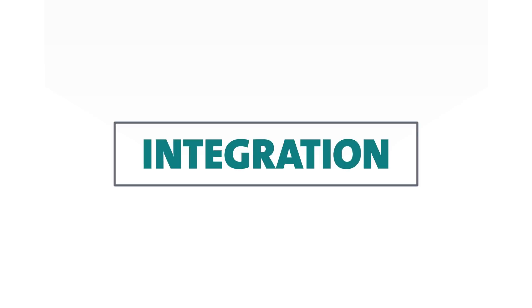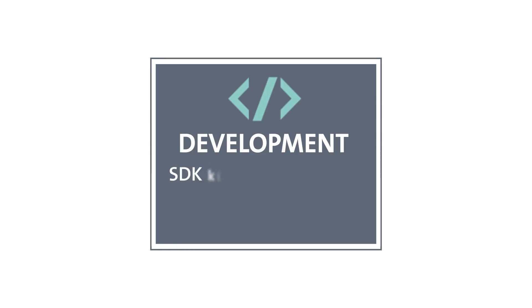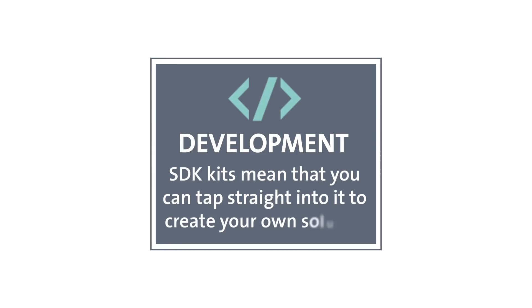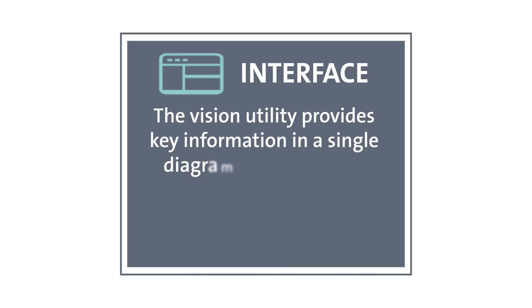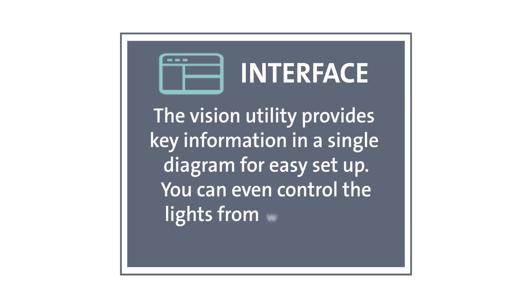Integration. The Trinity chip stores the make and model of the light, as well as a web link to its documentation, providing quick access to the relevant information. Software development kits mean that you can tap straight into it to create your own solution. The Vision utility provides key information in a single diagram for easy setup.